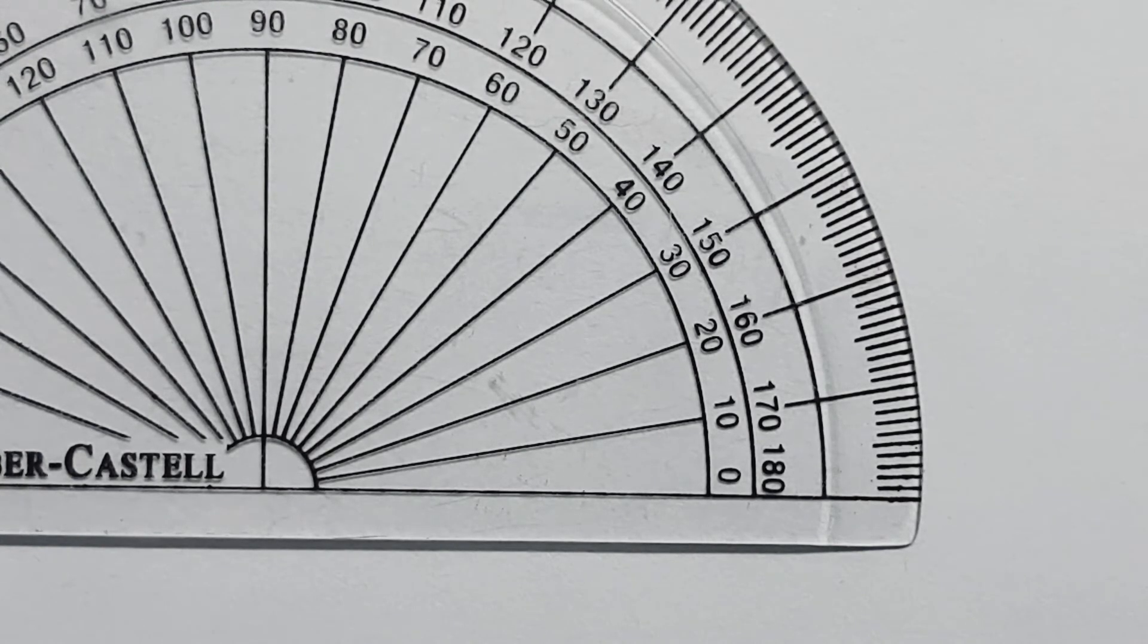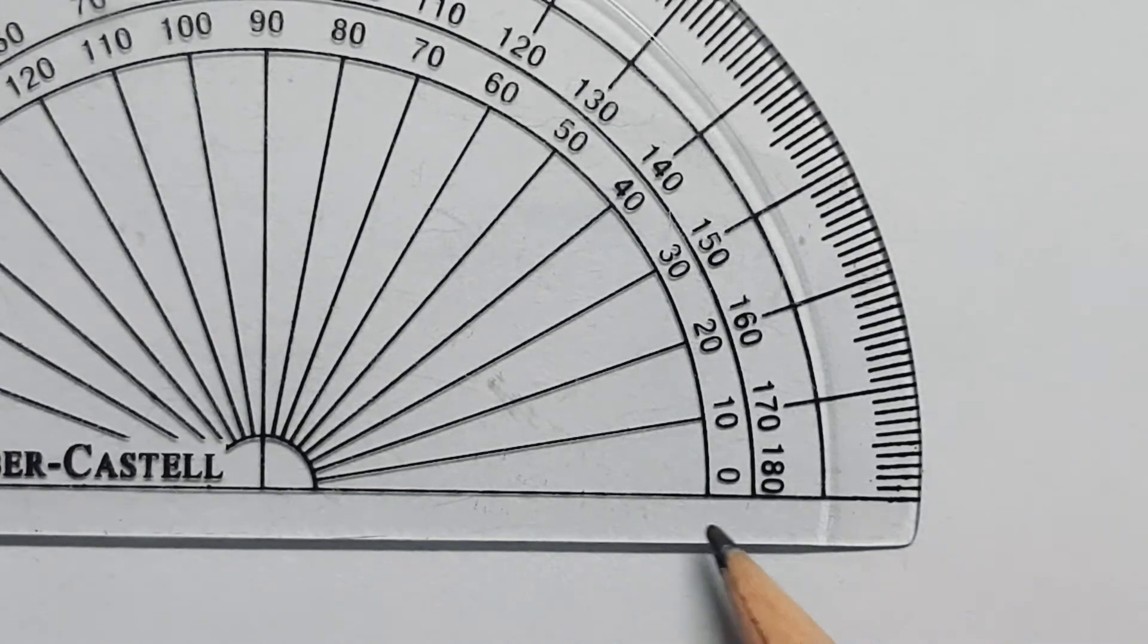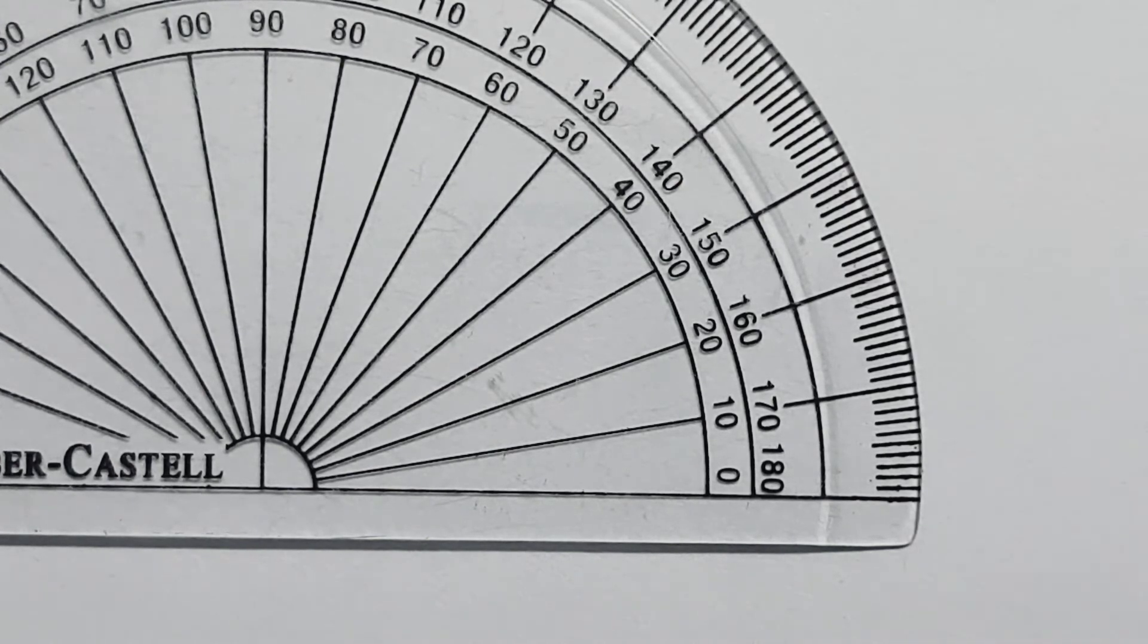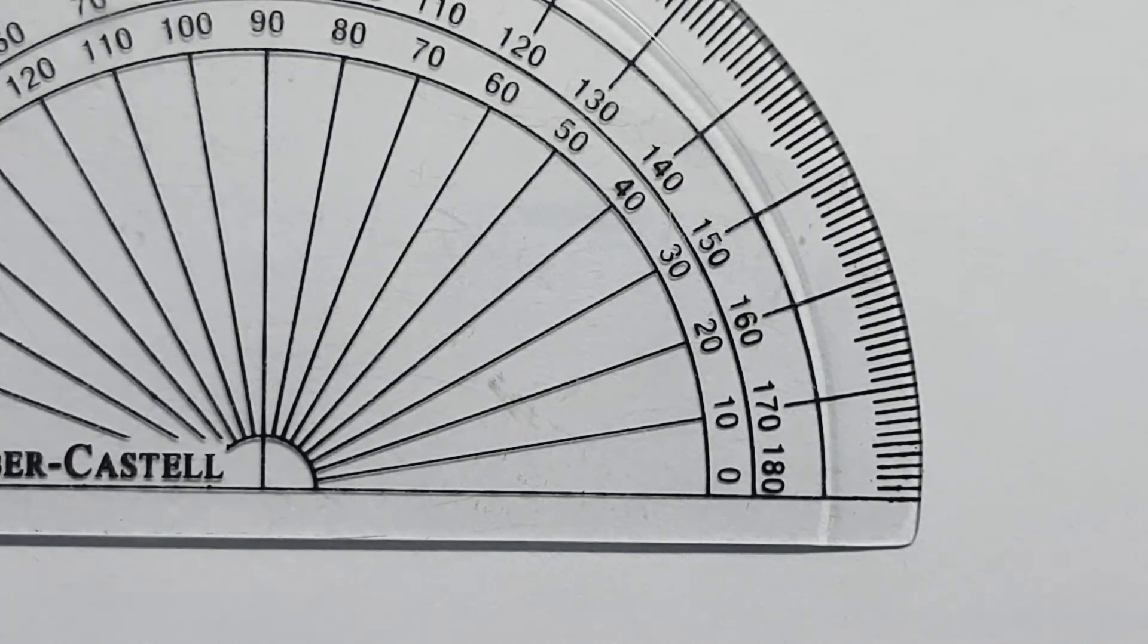Let us see how to read the protractor by looking at the lower scale. First, you can see the straight line over here. This line represents 0 degree. Now, I will zoom the protractor and show you.